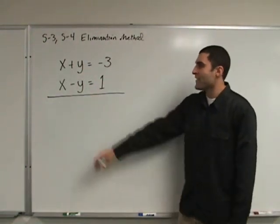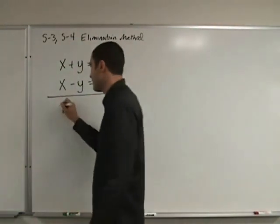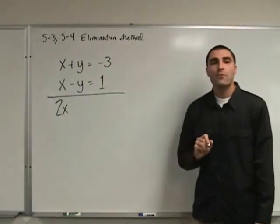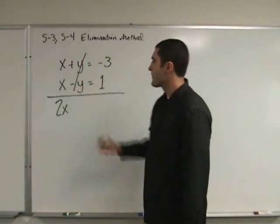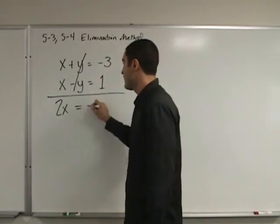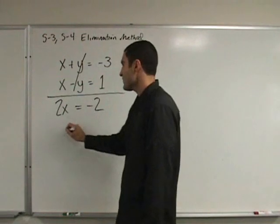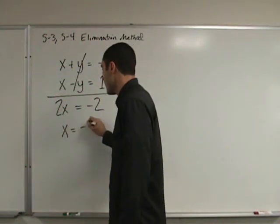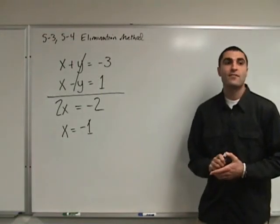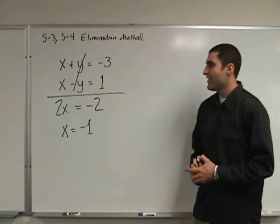So if we were to add down here, x plus x would be what? 2x. y plus negative y would be what? 0y. Negative 3 plus 1 would be what? 0. Is this solvable? Yes. What is x? X is negative 1. I like that method. I like it too. It's actually my favorite method. It's usually many people's favorite method. But if it's not your favorite method, then I don't hate you.